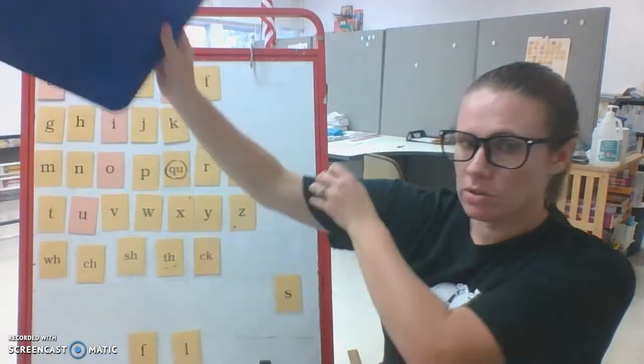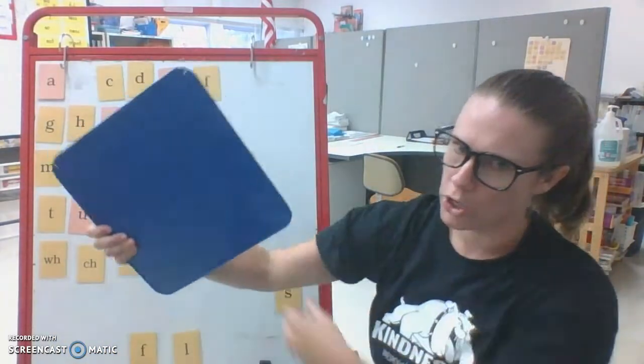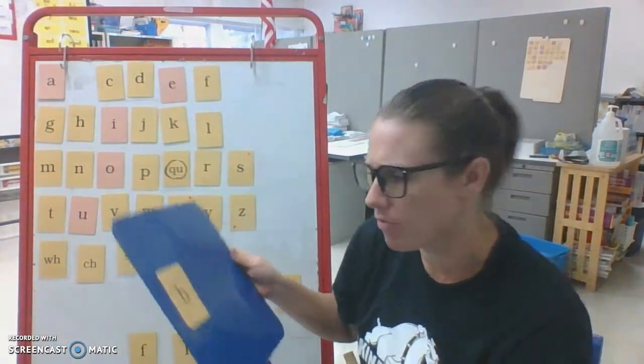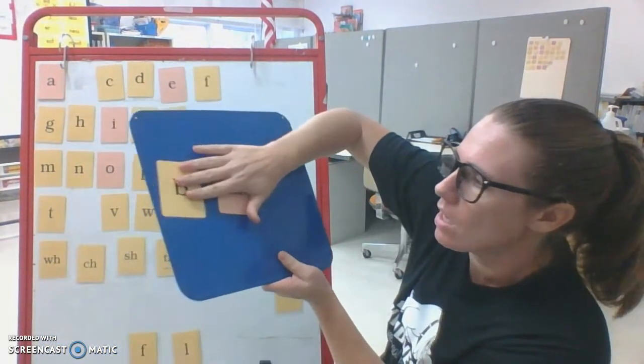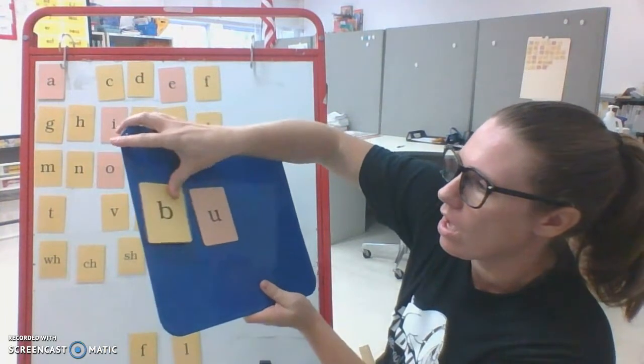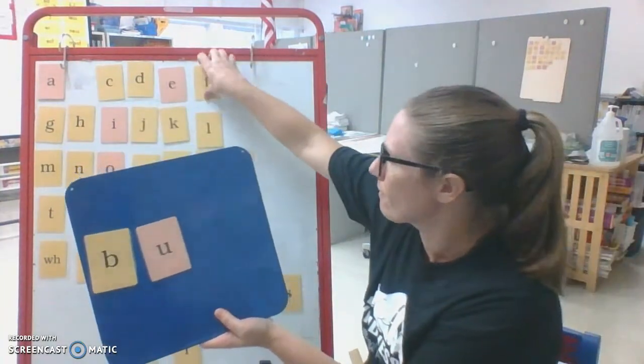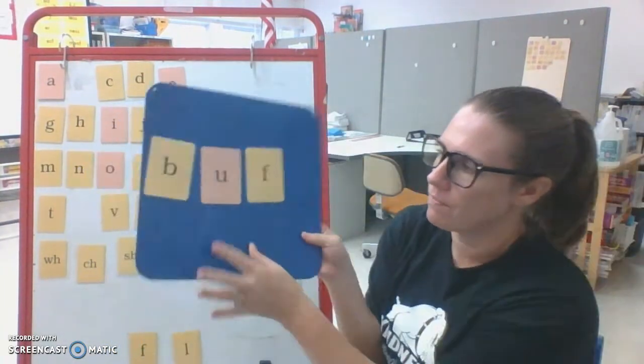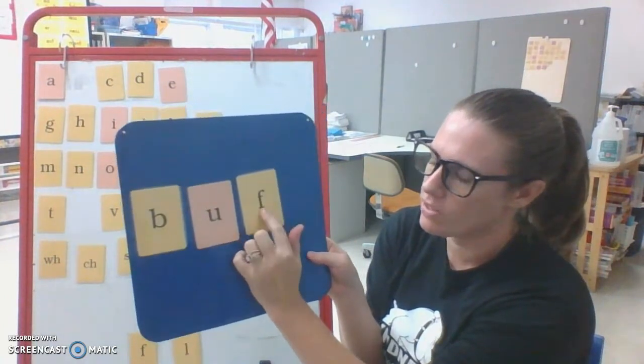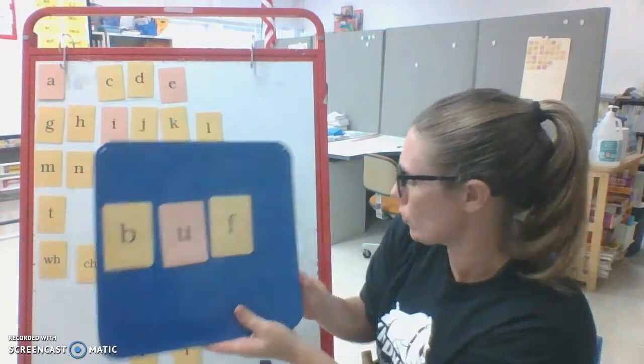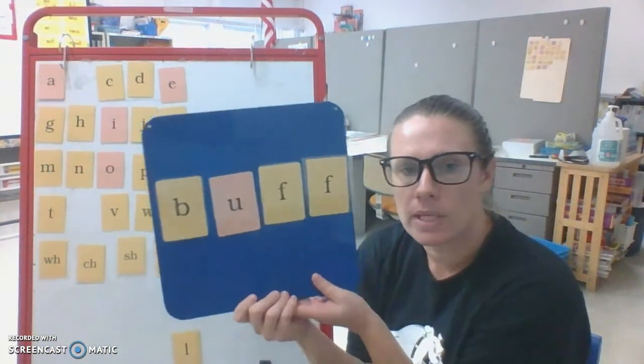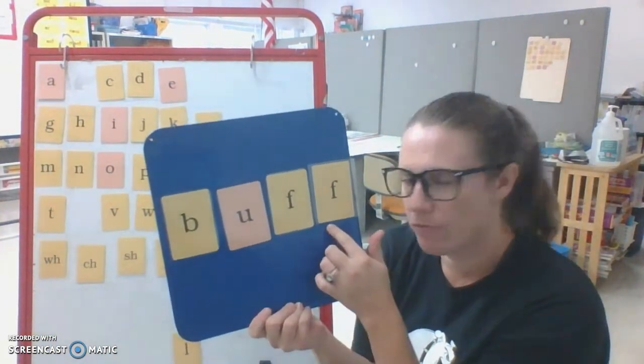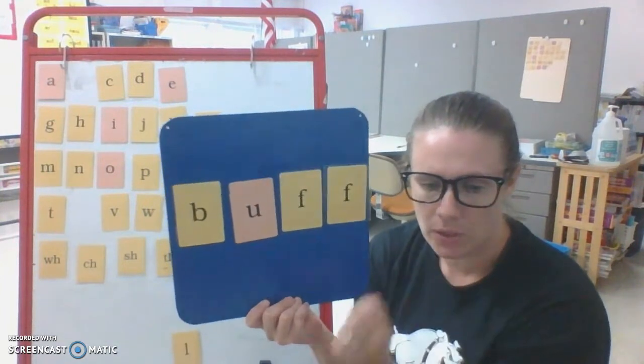Okay. Can everybody show me a muscle? Are you strong? We say that you're buff. I'm going to build the word buff. Buff, buff, uh, okay, here we go again. F ends the word right after a short vowel. So we need to double it. We need to make it buff.